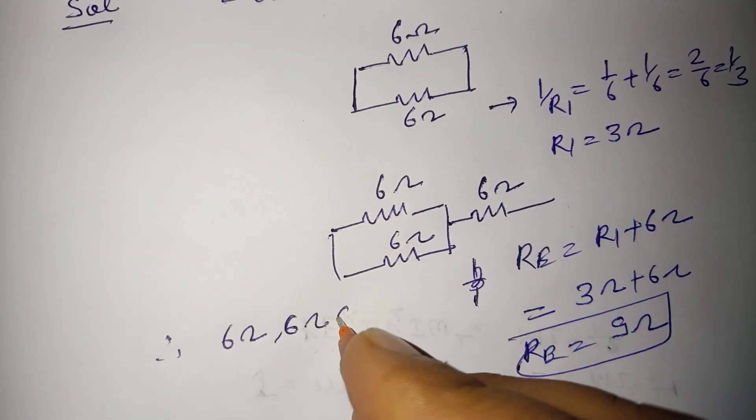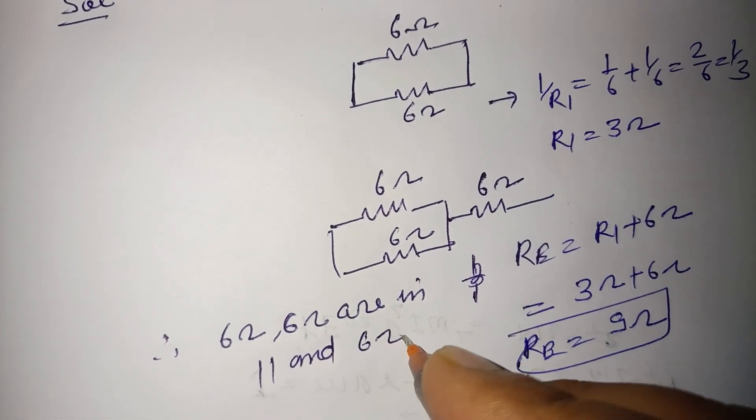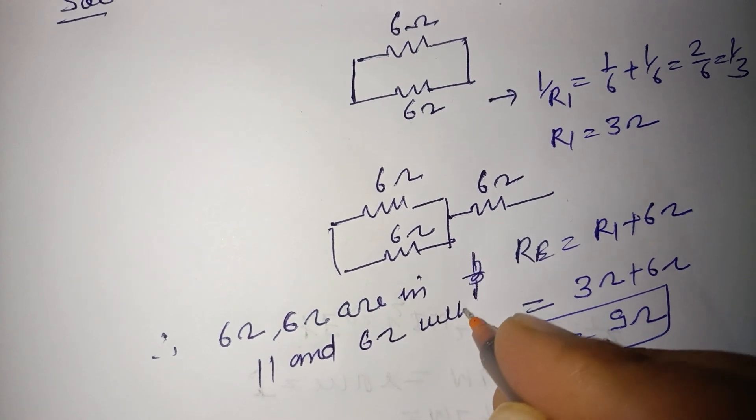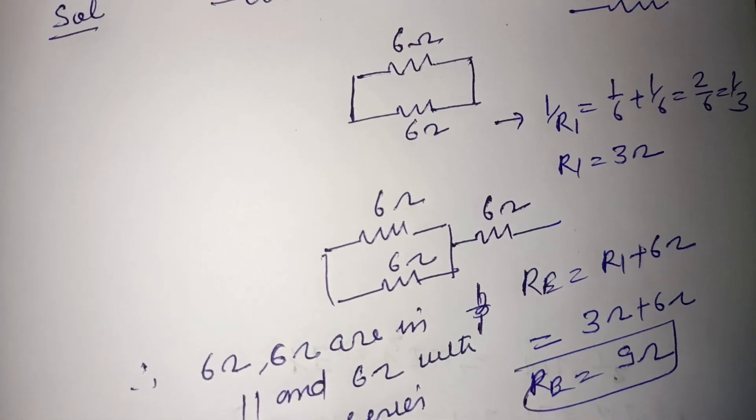Therefore, 6 ohms and 6 ohms are in parallel, and this combination is in series with the third 6 ohm resistor. So this is our answer. I hope you got it.